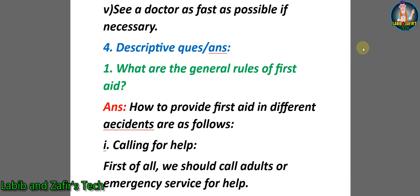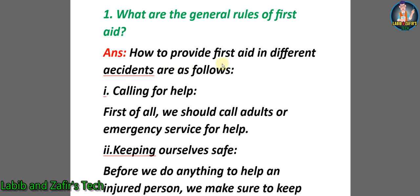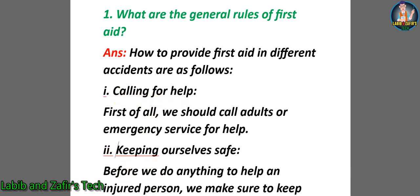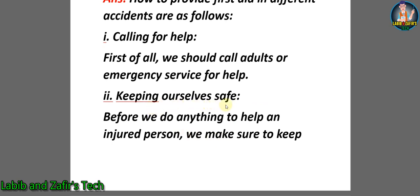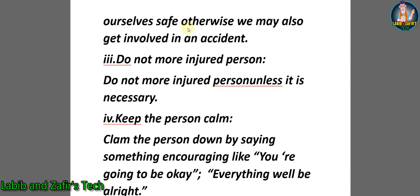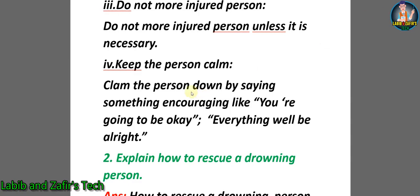Now let's go through some descriptive question answers. Number one: What are the general rules of first aid? Answer: Number one, calling for help — first of all we should call adults or emergency services. Number two, keeping ourselves safe before helping an injured person. Number three, do not move the injured person unless it is necessary. Number four, keep the person calm by saying something encouraging like 'You are going to be okay, everything will be alright.'